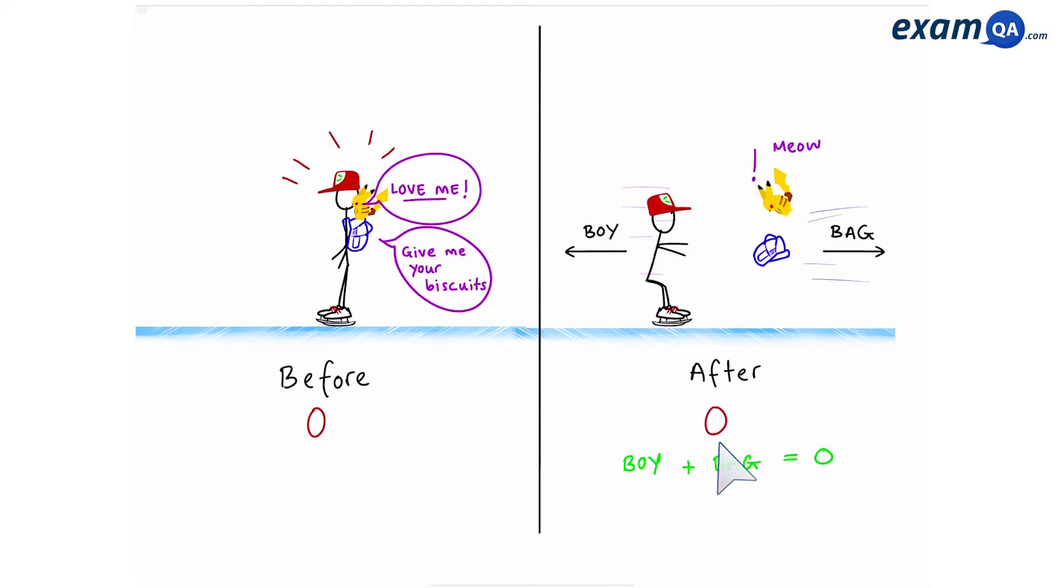we can see clearly that the boy and bag are moving. Which means that the momentum of the boy plus bag must be equal to zero. In other words, they're cancelling out. So if we rearrange this equation, we get boy equals minus bag. So the momentum of the boy and the bag are equal but opposite.